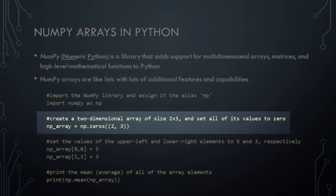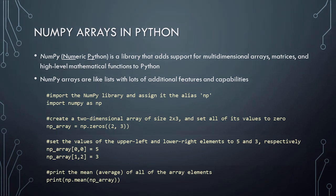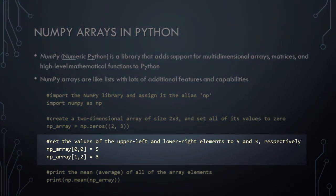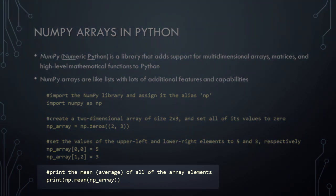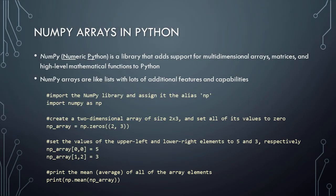In this example, we're creating a two-dimensional NumPy array of size 2 by 3 — that is, two rows and three columns — and are using the NumPy zeros function to set the values of all of the items in the array to 0. These next two lines of code set the values of the upper-left and lower-right elements in the array to 5 and 3, respectively. Finally, this last line of code demonstrates one of the many cool features of NumPy. Here we're using NumPy's mean function to automatically calculate the average of all of the elements in the array. NumPy has many similar functions such as min, max, median, etc., that can be very useful when working with numeric data.